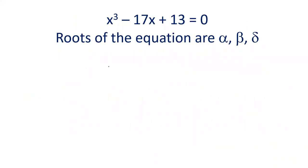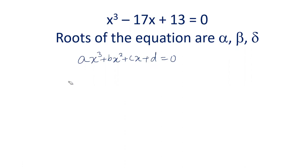Any cubic equation will be of the form ax³ + bx² + cx + d. The relation of the roots with the coefficients a, b, c, d is: minus b by a equals the sum of the roots, that is alpha plus beta plus gamma.